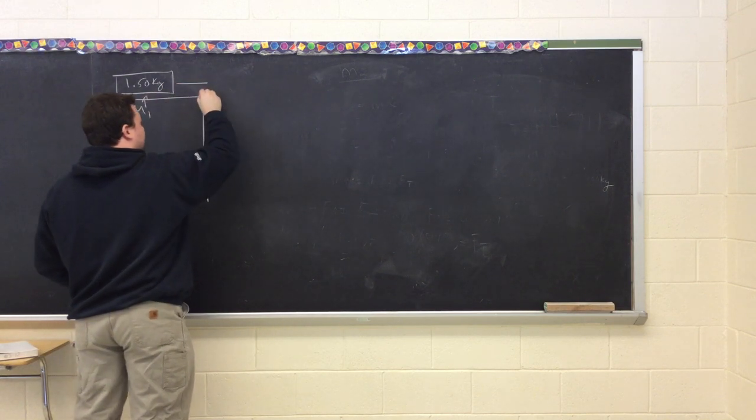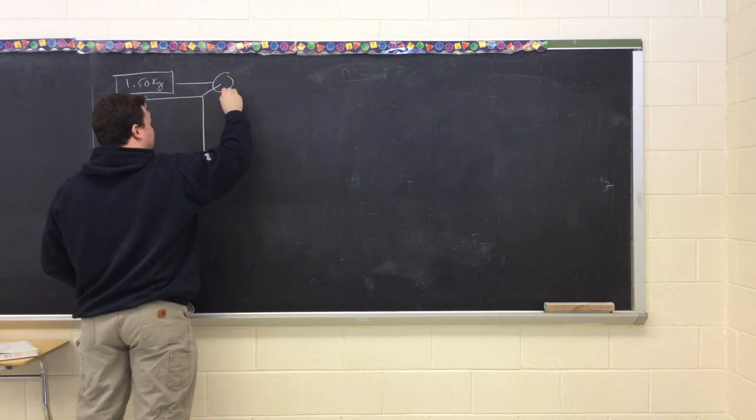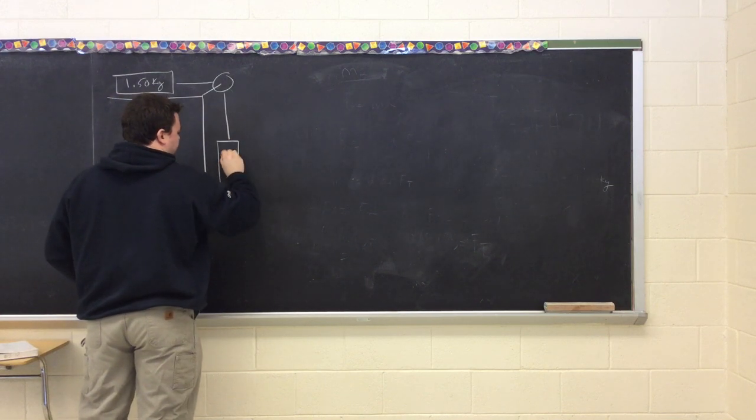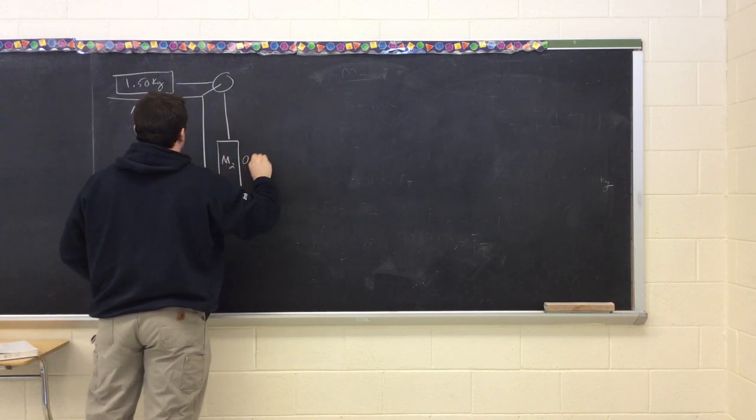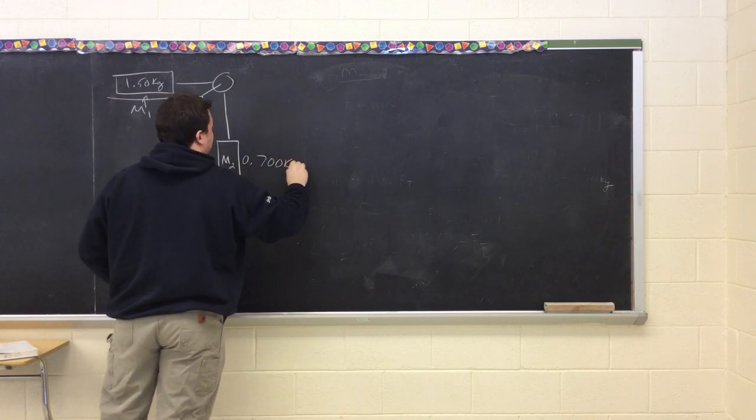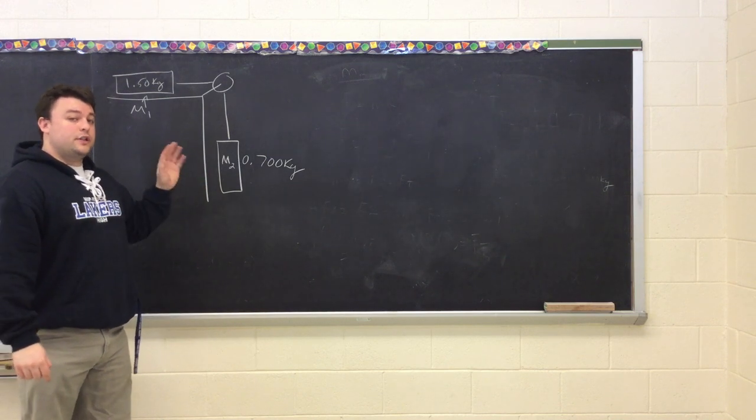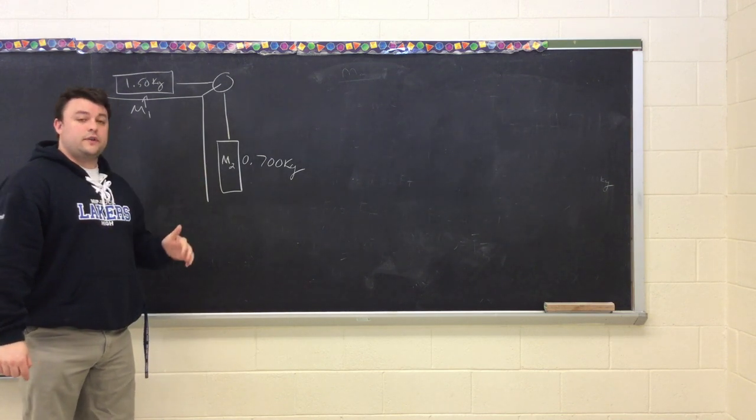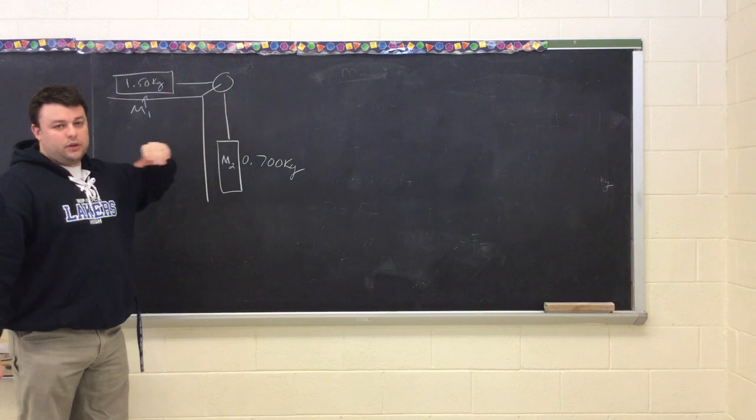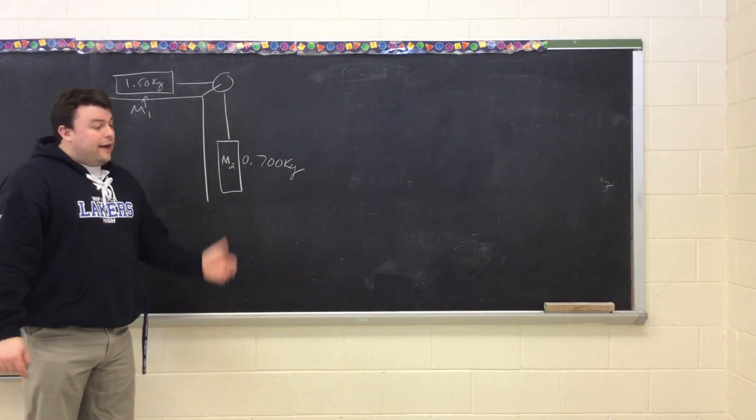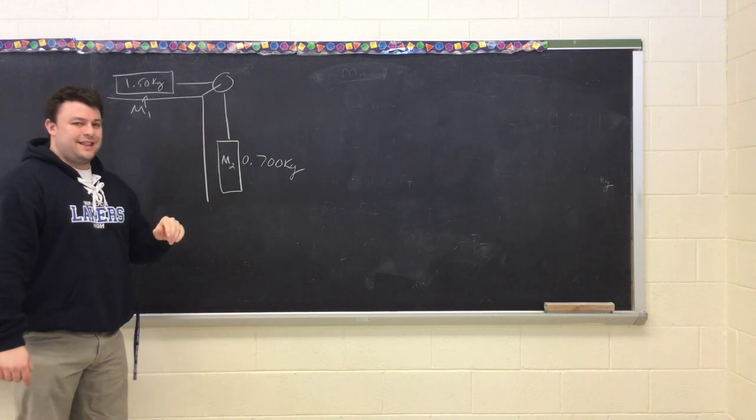So we have mass 1 and mass 2. Now it's important to note that friction in this problem, we are not going to use friction. So this is a frictionless pulley and a frictionless surface. Not really happening in reality, but for this problem we're going to set it that way.